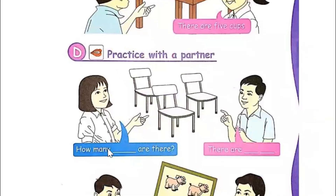Now practice. How many chairs are there? How many chairs are there? There are three chairs. How many pigs are there? There are four. Now practice. Amra, ask. How many chairs are there? There are three chairs.